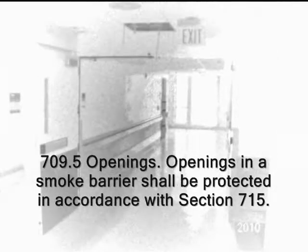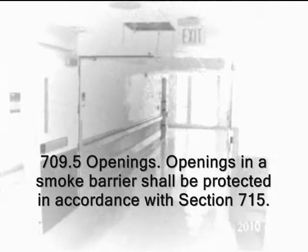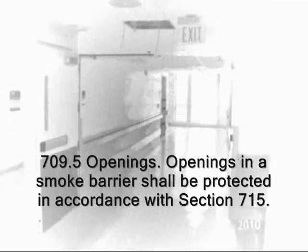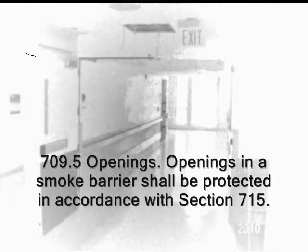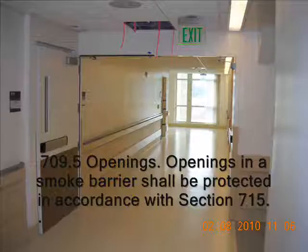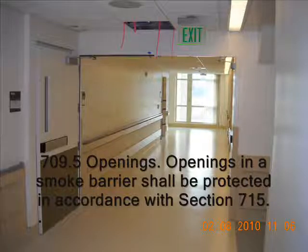Notice the code section up there — 709, smoke barriers. This is the 2007 code we're talking about. Openings in smoke barriers shall be protected in accordance with section 715 of the building code.